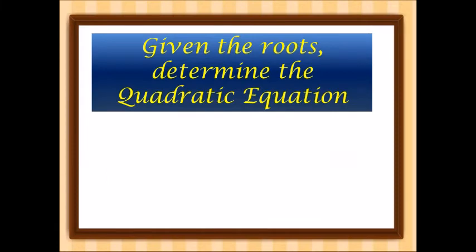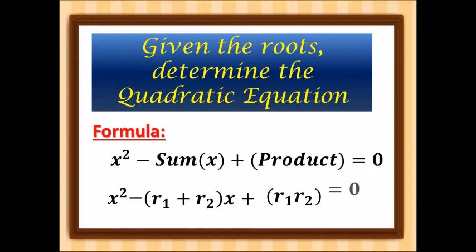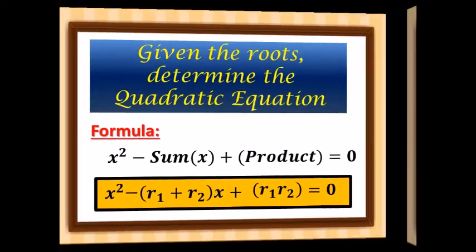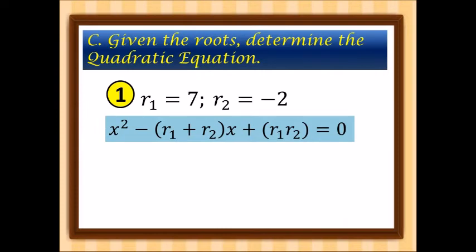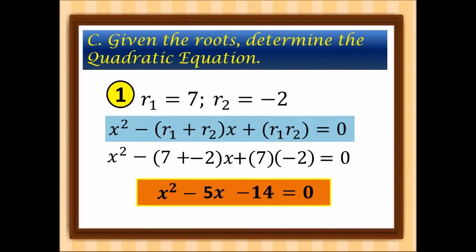Now, given the roots, let's determine the quadratic equation. The formula is: x squared minus (sum of roots)x plus (product of roots) is equal to 0. First example with roots 7 and negative 2: sum is 7 plus negative 2 equals 5, product is 7 times negative 2 equals negative 14. So the quadratic equation is x squared minus 5x minus 14 is equal to 0.